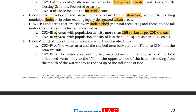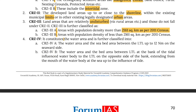CRZ 4 constitutes water areas and is further classified into CRZ 4A and 4B. Type A covers water areas and seabed areas between the low tide line up to 12 nautical miles on the seaward side. Type B covers water areas and bed areas between the low tide line at the bank of the tidal influence water body to the low tide line on the opposite side of the bank, extending from the mouth of the water body at sea up to the influence of tide.